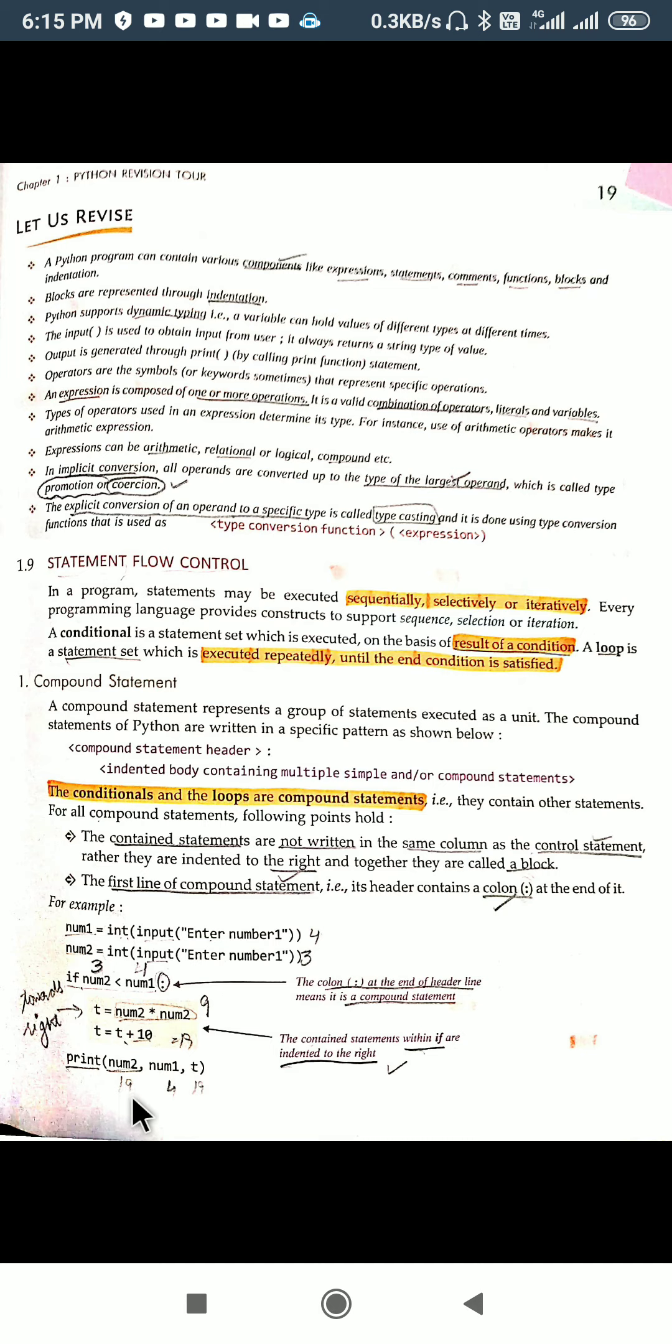Sorry, num2 will be num2 is 3 only. Here it should be 3, by mistake it has been written here. This will be 3, num1 will be 4, and t will be 19. I hope you have understood it. Thank you.